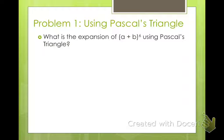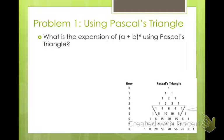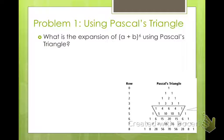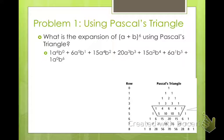What is the expansion of a plus b to the 6th power using Pascal's triangle? Here's the triangle — row 6 gives the coefficients 1, 6, 15, 20, 15, 6, 1. Each time, a starts at the 6th power and decreases by 1, while b starts at 0 and increases — the powers always add up to 6. So we get: 1 times a to the 6th b to the 0, plus 6 times a to the 5th b to the 1st, plus 15 times a to the 4th b to the 2nd, plus 20 times a cubed b cubed, plus 15 times a squared b to the 4th, plus 6 times a to the 1st b to the 5th, plus 1 times a to the 0 b to the 6th.